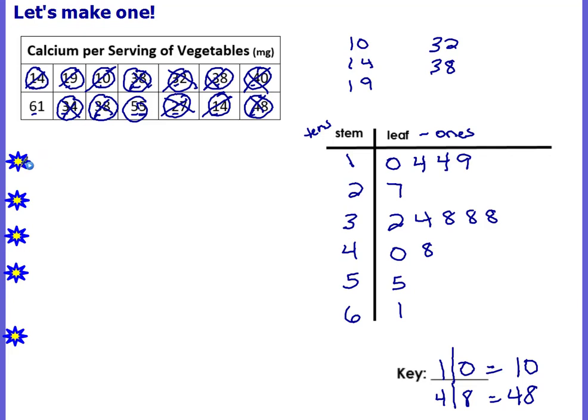Now you can also answer questions. What is the median of our stem and leaf plot? Median means the middle, so we're looking for the middle number. You could cross off low, high, low, high, and keep doing that.